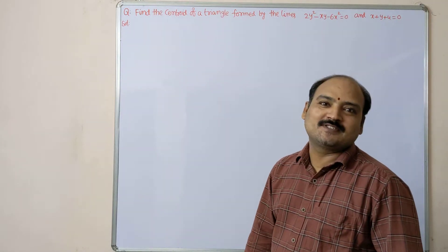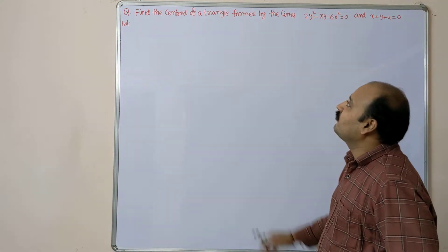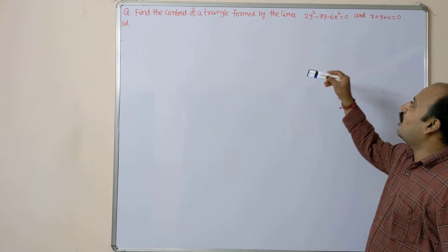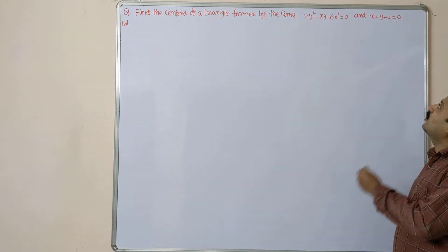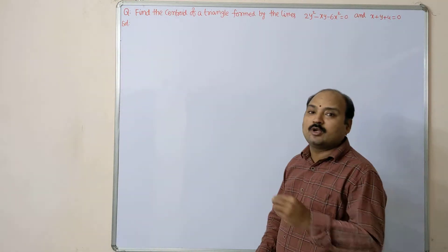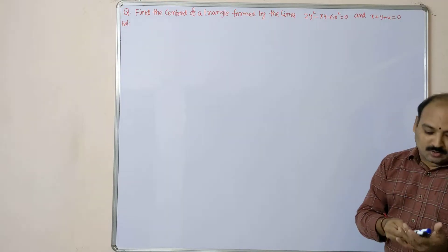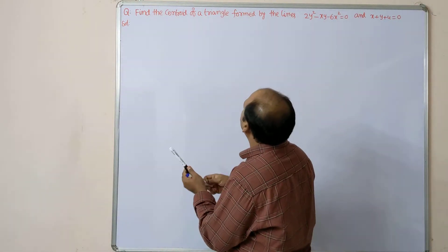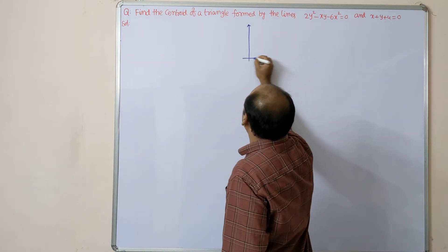Now let us have a discussion. The problem is: find the centroid of the triangle formed by the lines 2y² - xy - 6x² = 0 and x + y + 4 = 0. This is the pair of lines passing through the origin - see the figure will come like this for this question.